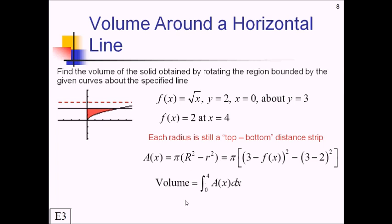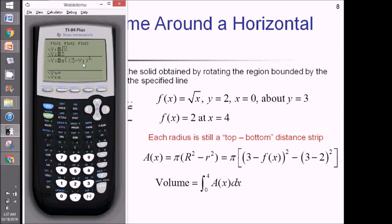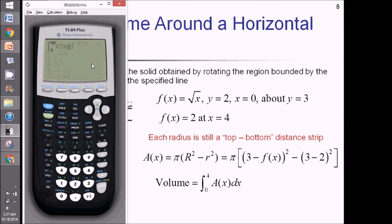It's just this a of x that keeps changing. I'm going to put this in the calculator now. I've started putting my a of x function in y3 — I don't want to try writing all this inside an integral. So I've got pi, parentheses, then 3 minus y1 all squared, and then I'm going to subtract 1 — because 3 minus 2 squared is just 1. Get out and do the integral from 0 to 4 of y3 dx, and this is going to come out to 25.133.